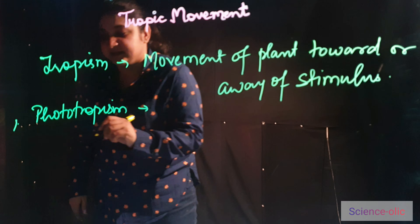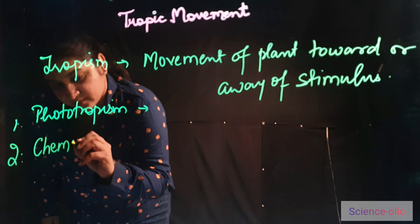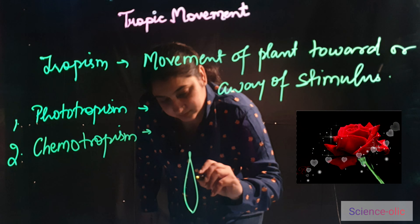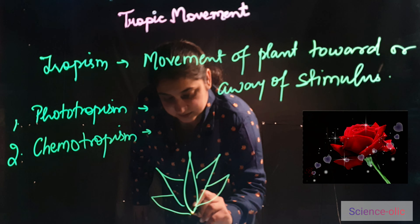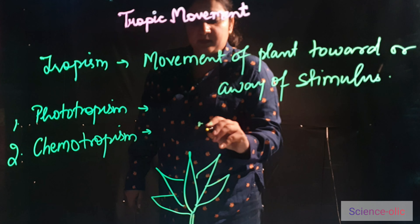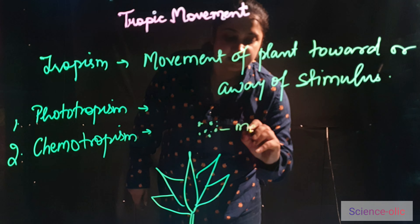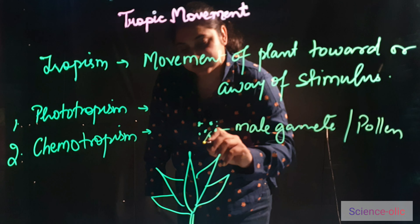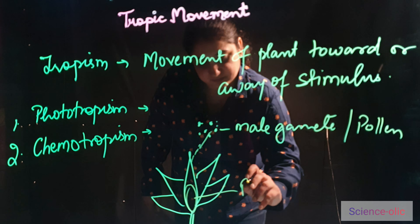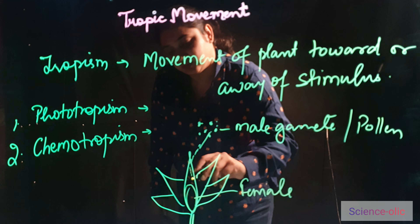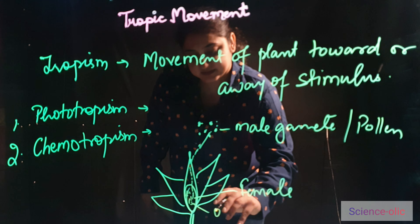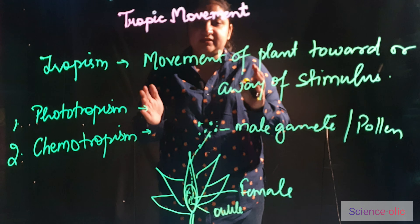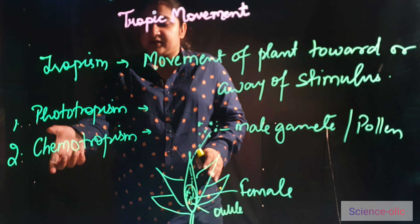The next is chemotropism. Chemo means chemicals. In flowering plants, suppose this is a flowering plant and these are the pollens — the male gametes. These come towards the ovule, the female part in flowers. They move through certain chemicals to the ovule. This movement attracted by certain chemicals is known as chemotropism.